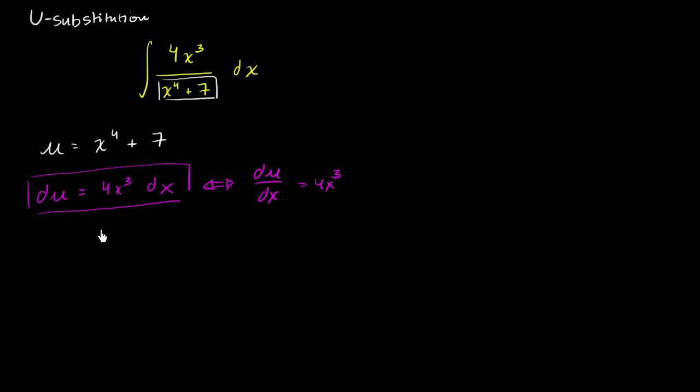And the reason why this is useful, I'll just rewrite it up here so that it becomes pretty obvious. Our original integral we can rewrite as 4x to the third dx over x to the fourth plus 7. And then it's pretty clear what's du and what's u.